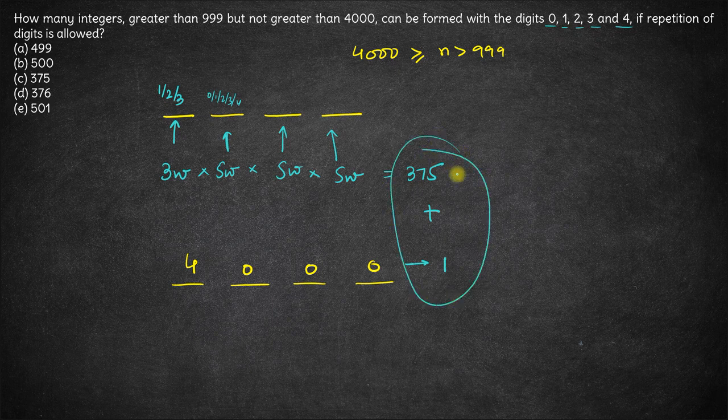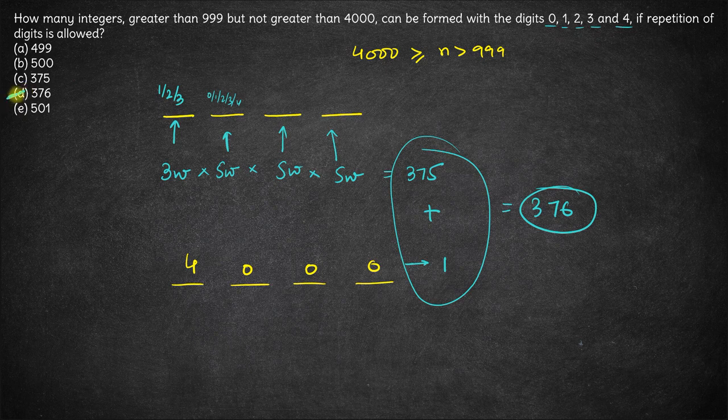So the total number of numbers that are possible is 376. Hence the answer here is option D, 376. Thank you.